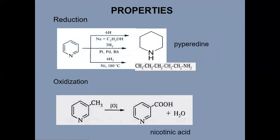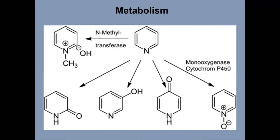Reduction of pyridine: the product of this reaction is piperidine. Oxidation of pyridine or its derivatives: the product of this reaction is nicotinic acid. The scheme of metabolism of pyridine in the organism shows that the main pathways are methylation, oxidation, and hydroxylation.